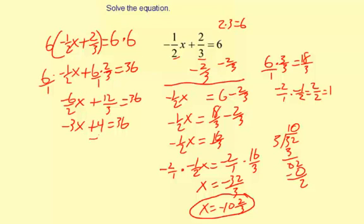Now I can subtract 4 from both sides. So I get negative 3x equals 36 minus 4, which is 32.